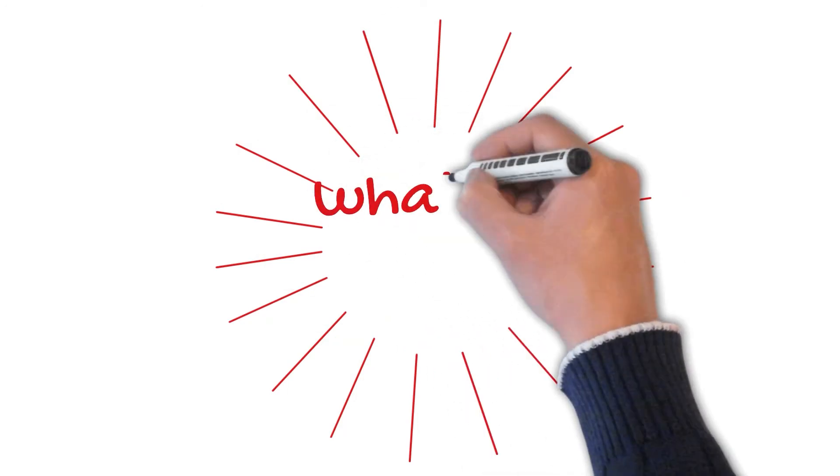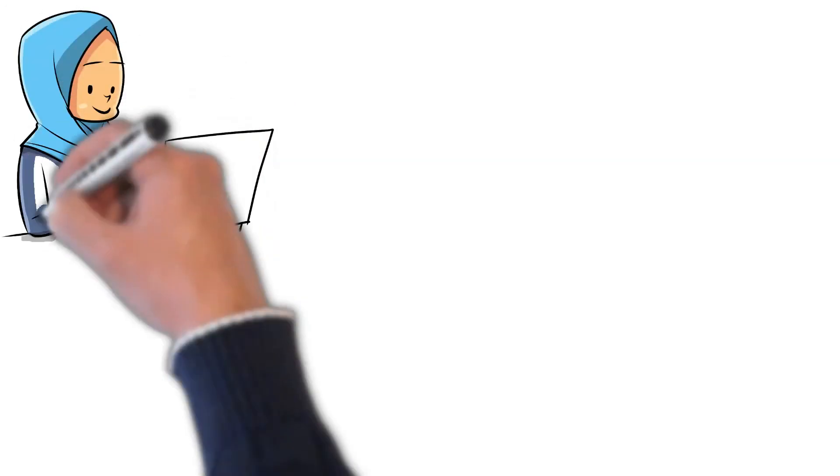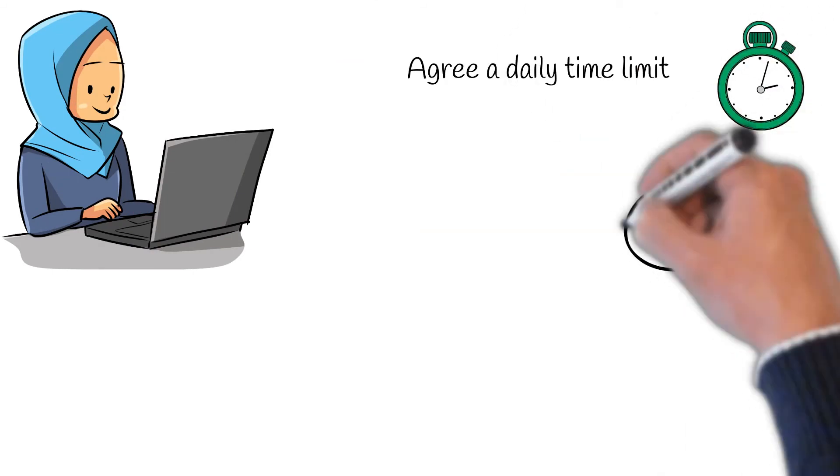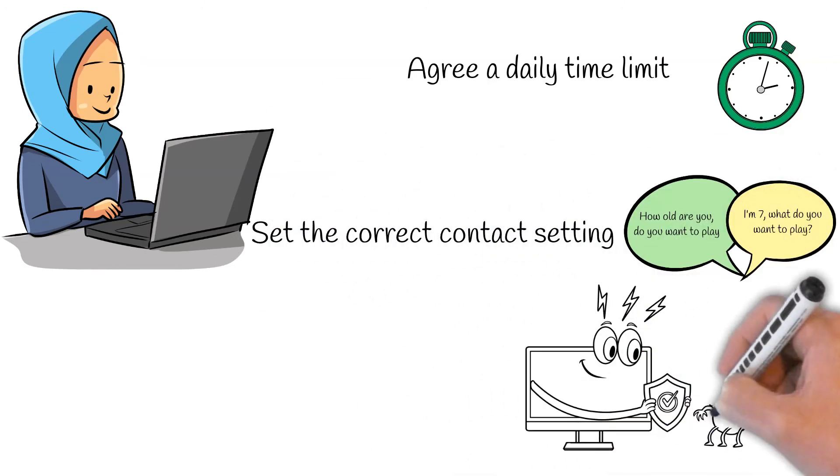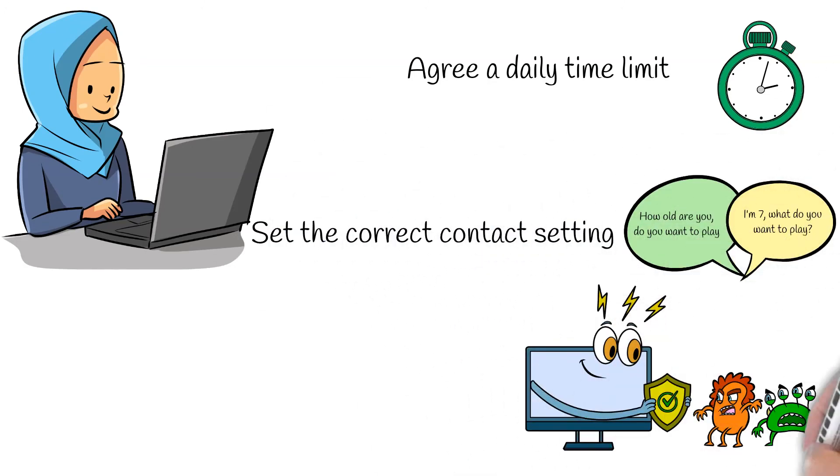As a parent or guardian, what can you do? We'd always recommend agreeing a daily time limit with your child. We would then recommend that you go on to the Roadblock settings and set the correct contact settings, and then in the same settings, set up the other settings.